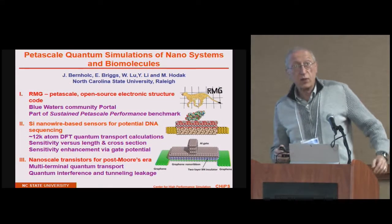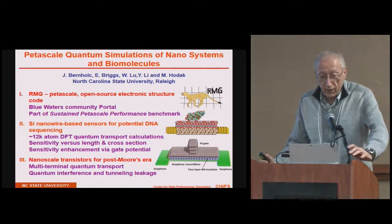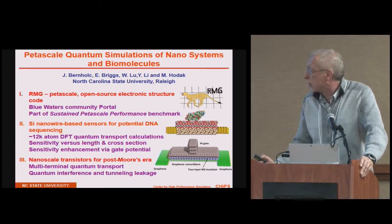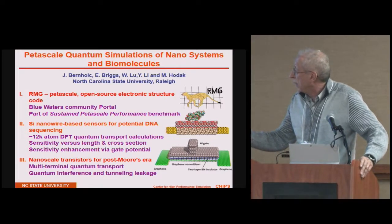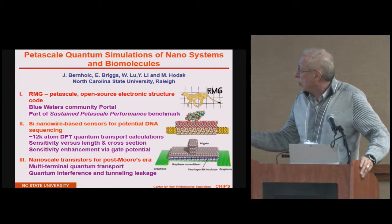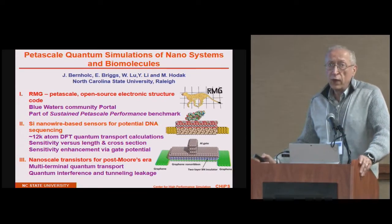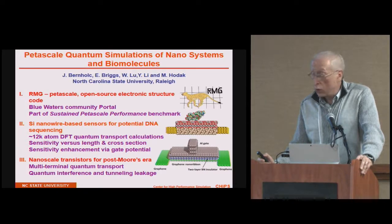What I'm going to talk about is both a code and its applications. We have RMG, a real-space multigrid code, which is a large-scale density functional code.